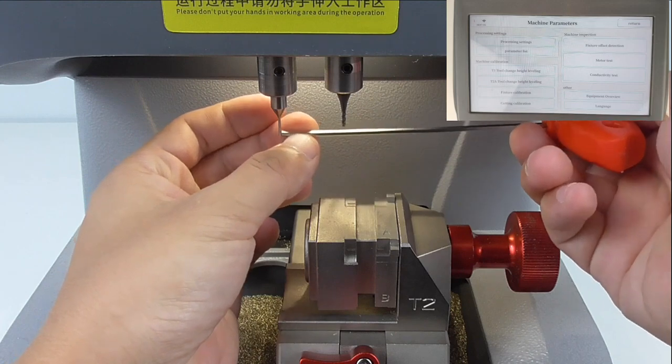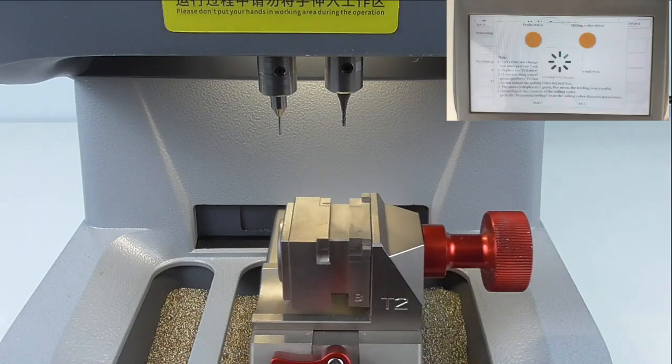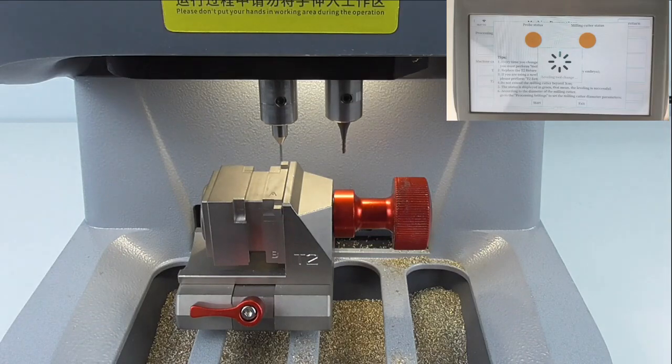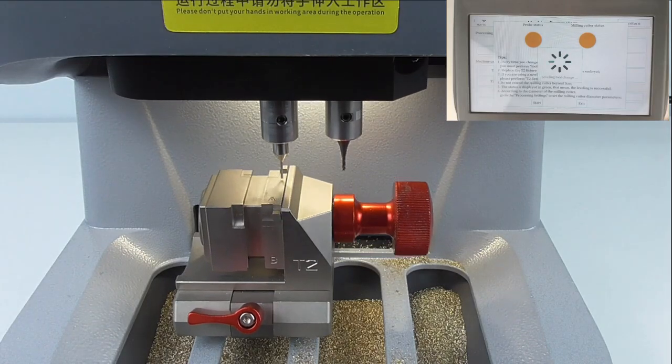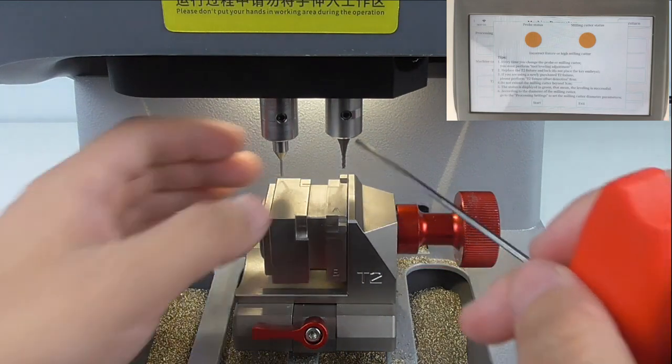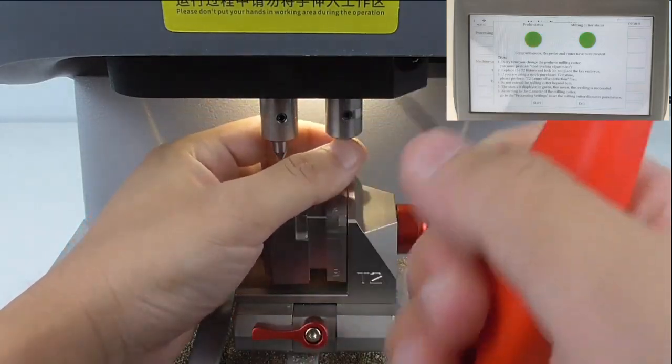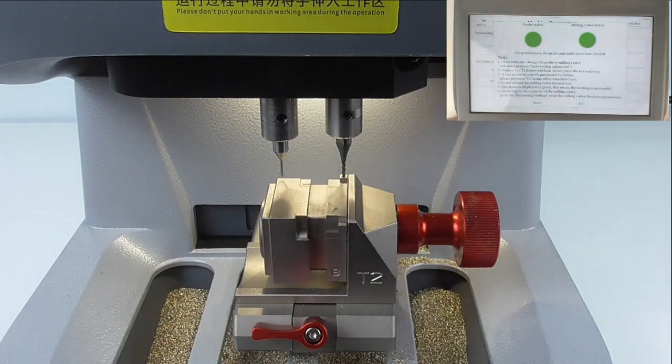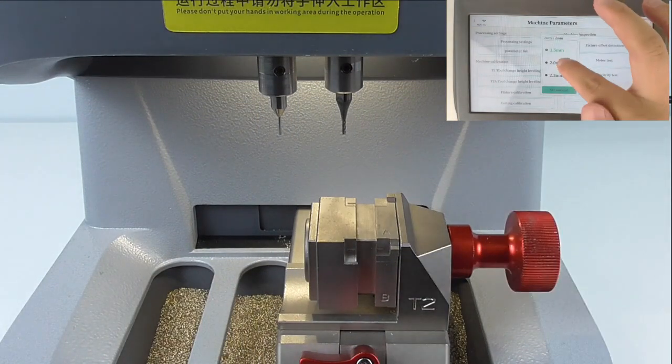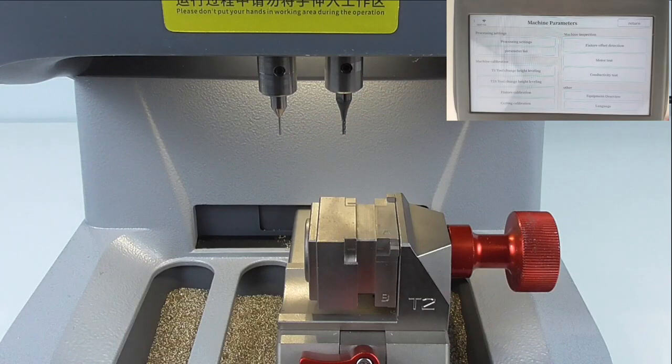This should be higher than the probe. Then still T2A, clean start. Here it is greener, then you can set 1.5 here. Then you can use this cutter to cut a key.